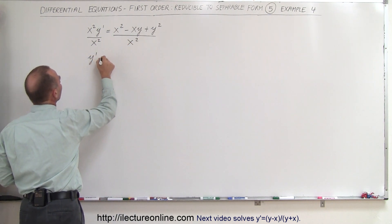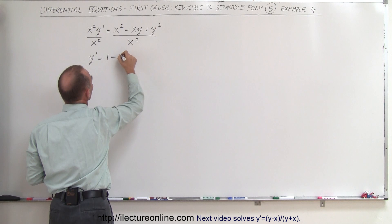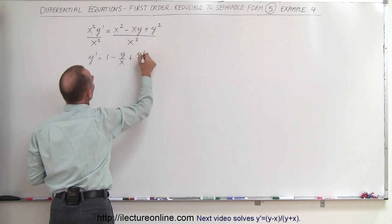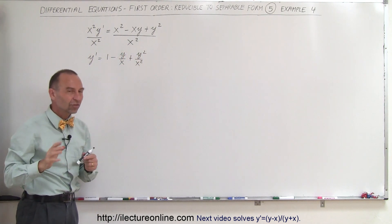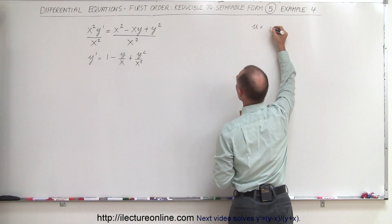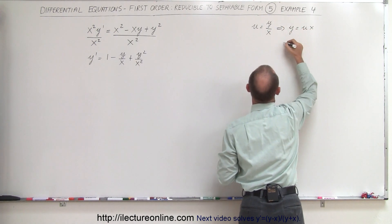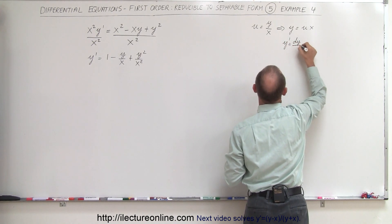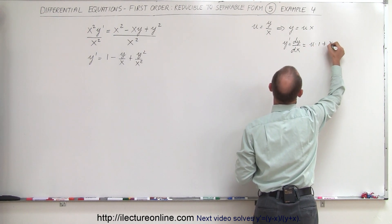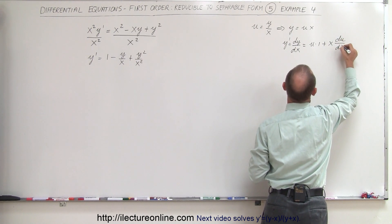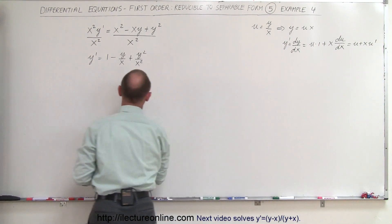The left side then becomes: y-prime is equal to 1 — that goes in there once — then we have x divided by x-squared, so that's minus y over x, and here we have plus y-squared over x-squared. Notice we have a y/x and a y-squared/x-squared, so it looks like the right substitution would be u equals y over x, which means y equals u times x. Then y-prime, which is dy/dx, can be written as the first times the derivative of the second plus the second times the derivative of the first: u plus x times u-prime.